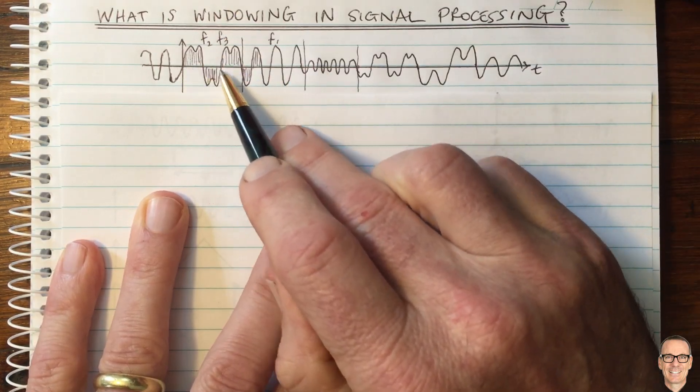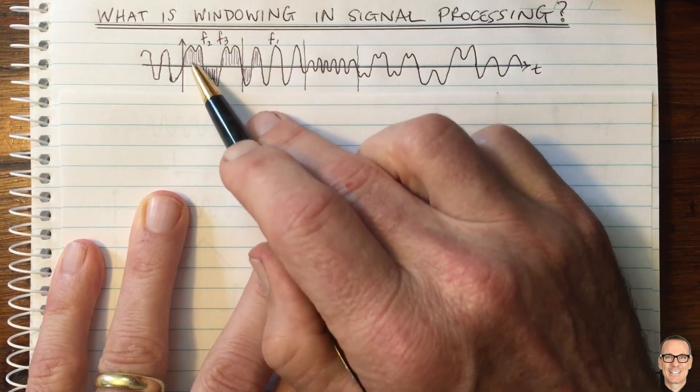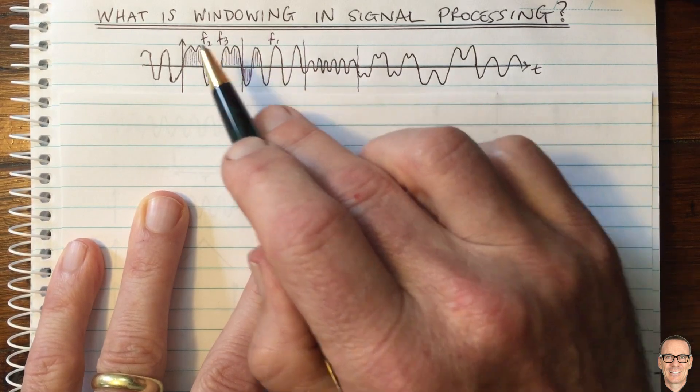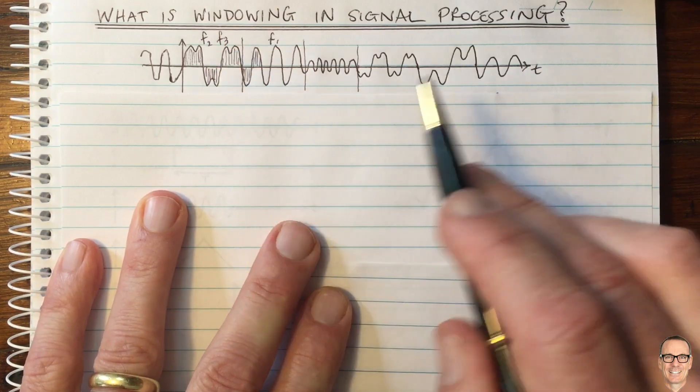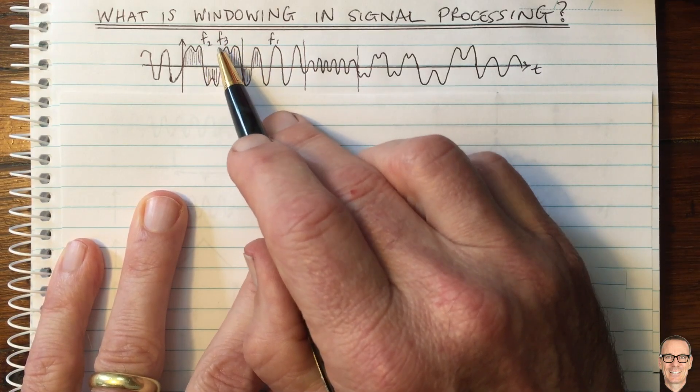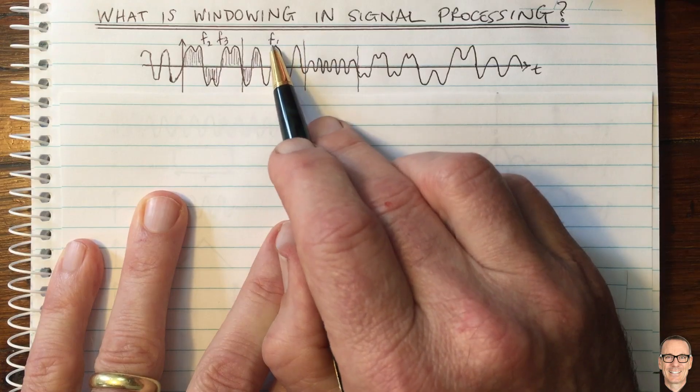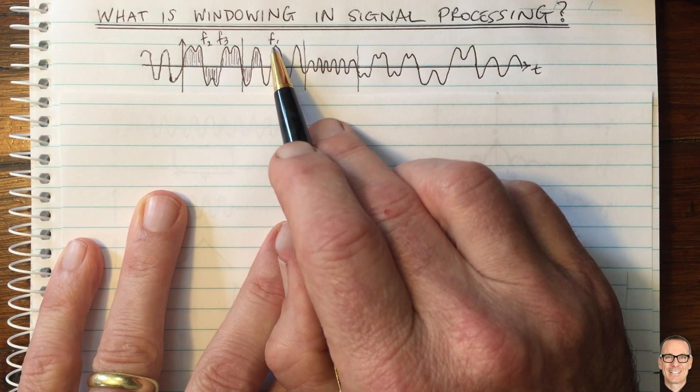And if we could work out what those frequencies were, we wouldn't need to store all of these samples. All we would need to do is to store the values of the frequencies. And when we play it back, we would just generate those frequencies, having recorded just those frequency values. And that would be a lot of compression.